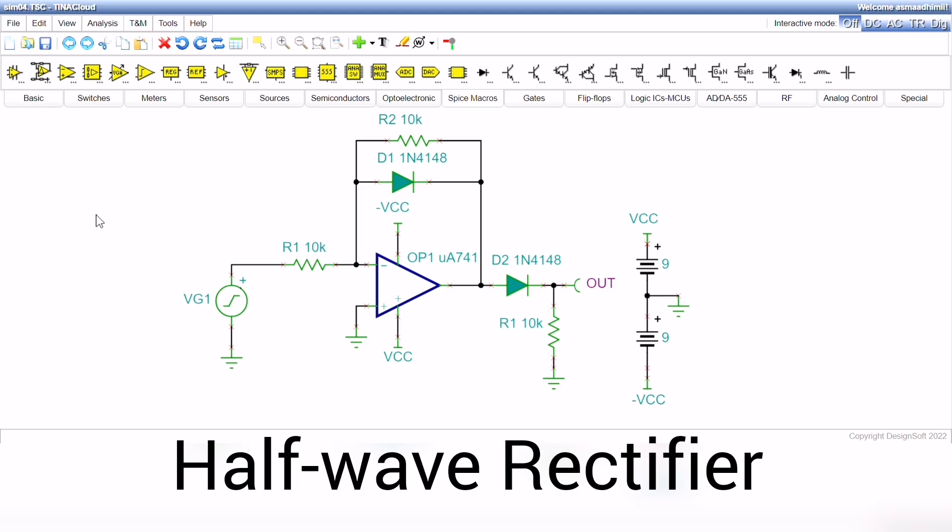During the negative half-cycle of sinusoidal input, the output of the op-amp will be positive, and D1 and D2 will be reverse-biased and forward-biased, respectively.